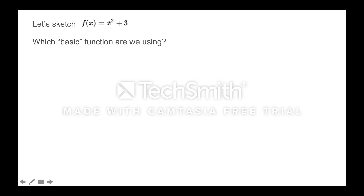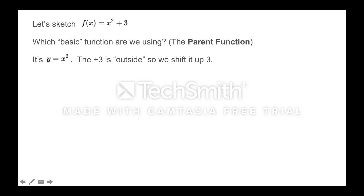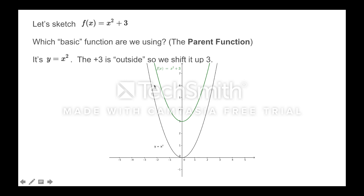For example, let's say we want to sketch the graph of f(x) = x² + 3. We have to think: which basic graph does this look like? Well, this looks like y = x². We know that graph. What's this plus 3 doing? That's outside — it's not being squared. That plus 3 is outside, so anything outside is a vertical shift. We're going to take this original graph and shift it up 3 units. The black graph is y = x², and this green graph is f(x) = x² + 3.